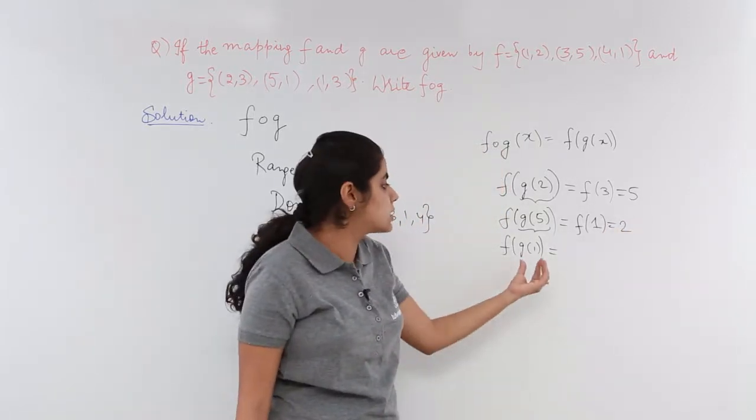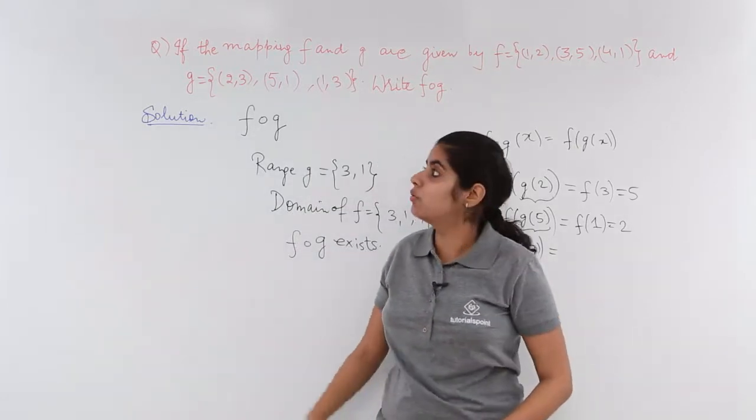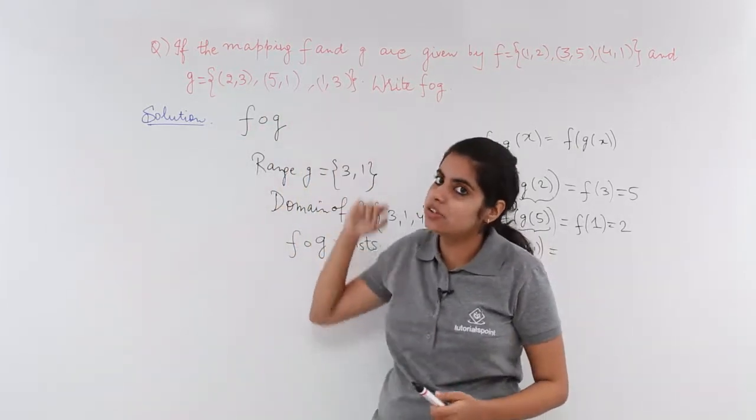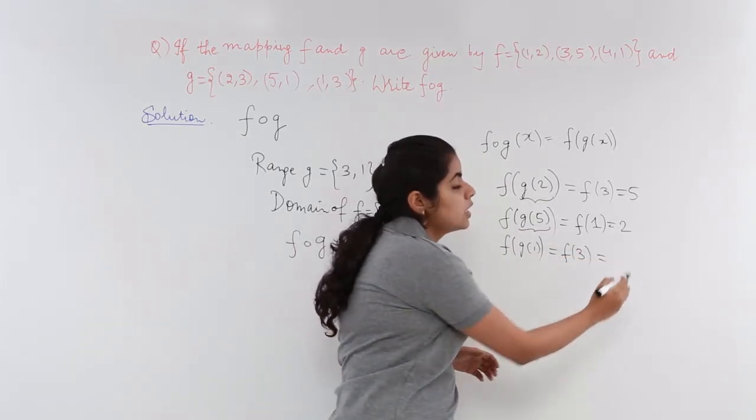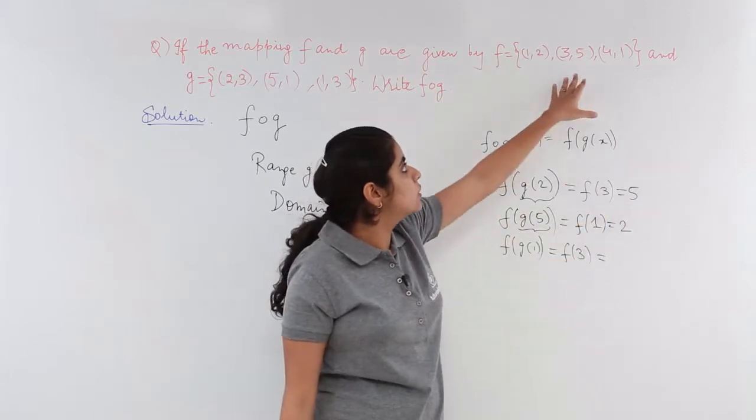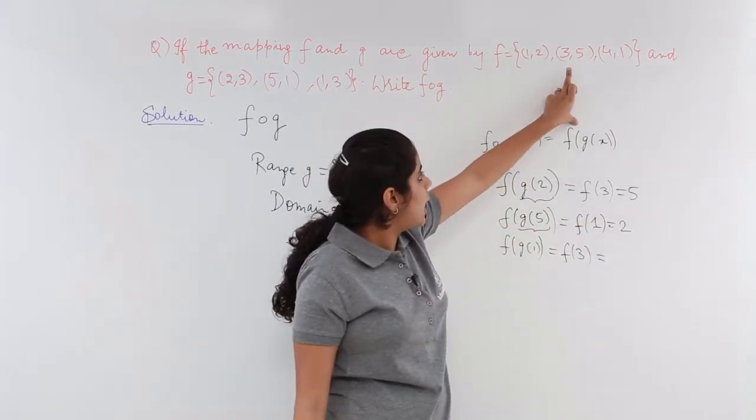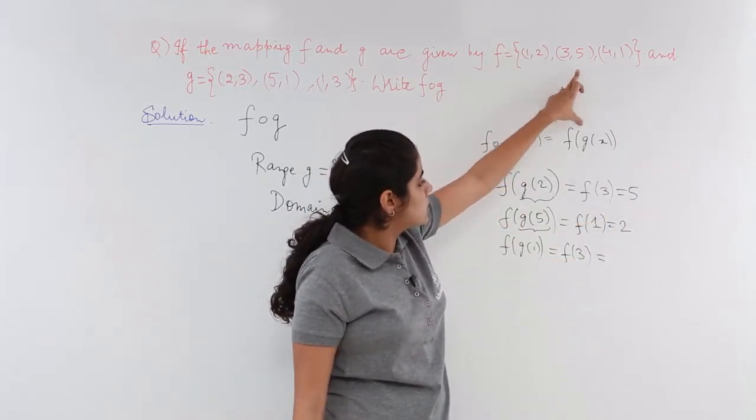Last but not the least what is G of 1? G of 1 is 3. So F of 3. Now what is the value of F at 3? The value of F at 3 is 5.